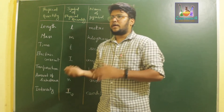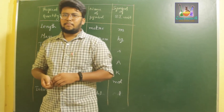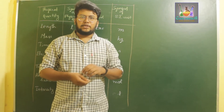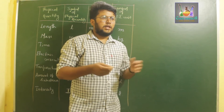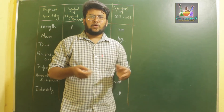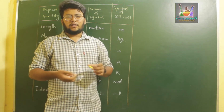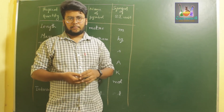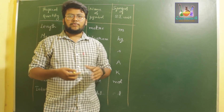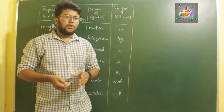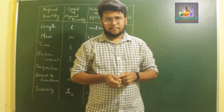Once you know either a physical or chemical property — especially physical properties — you need to give them a proper unit. For example, you can't say 'give me one kilogram of temperature.' Each particular quantity has its own specific units.